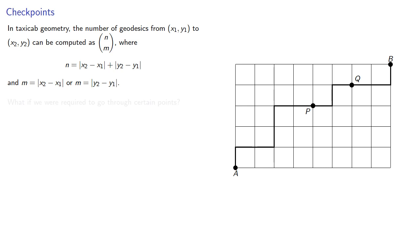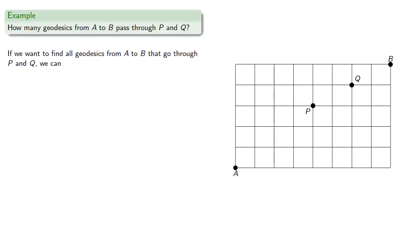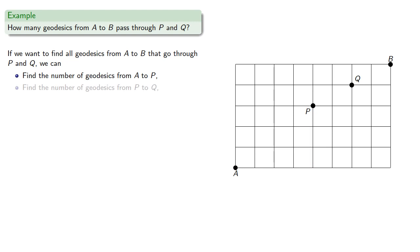But what if we were required to go through certain points? We can use the multiplication principle. So if we wanted to find the geodesics from A to B that also pass through P and Q, we can find the number of geodesics from A to P, the number of geodesics from P to Q, the number of geodesics from Q to B, and then multiply them.